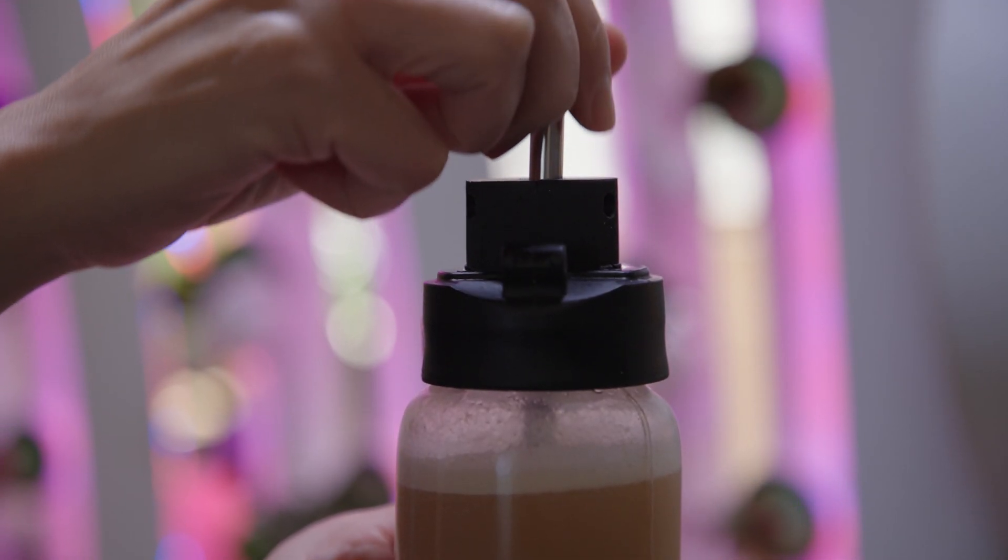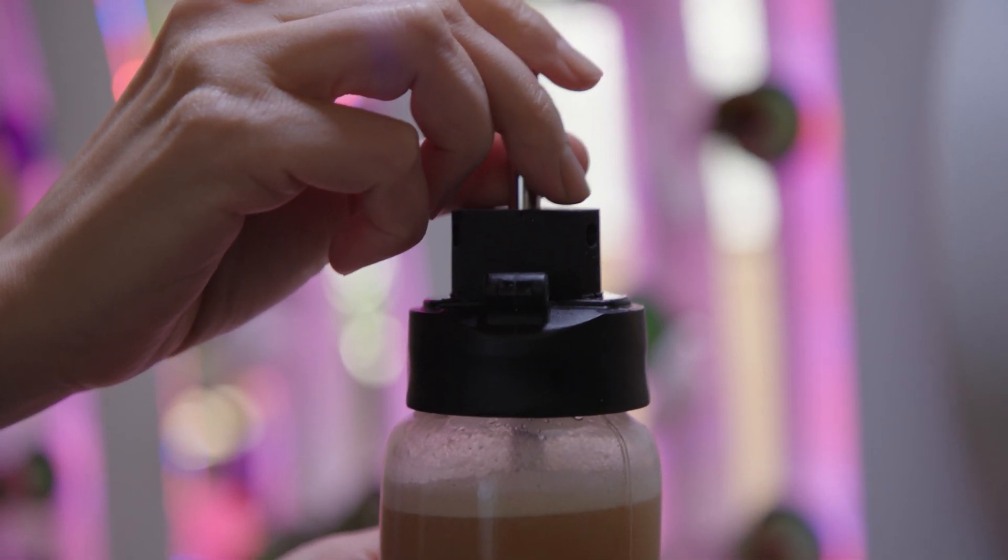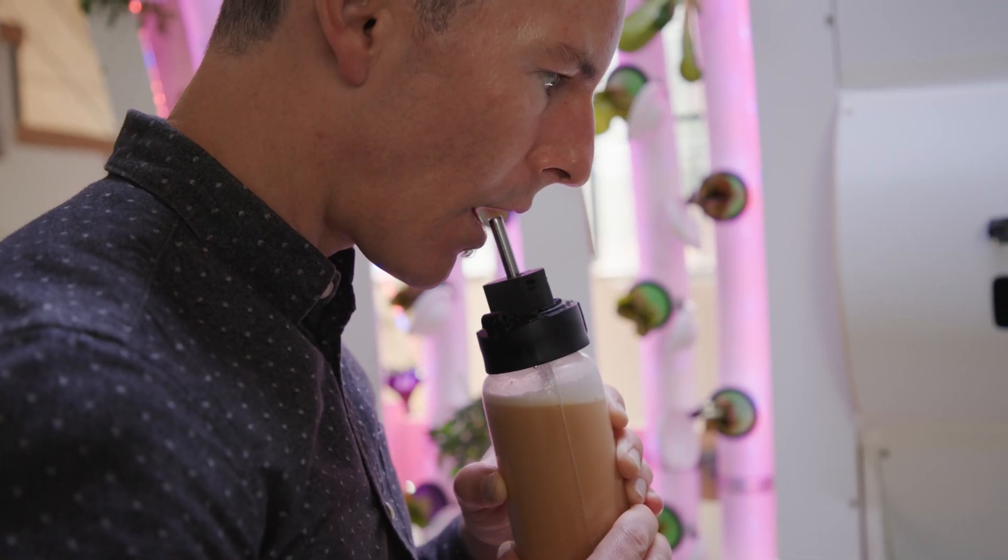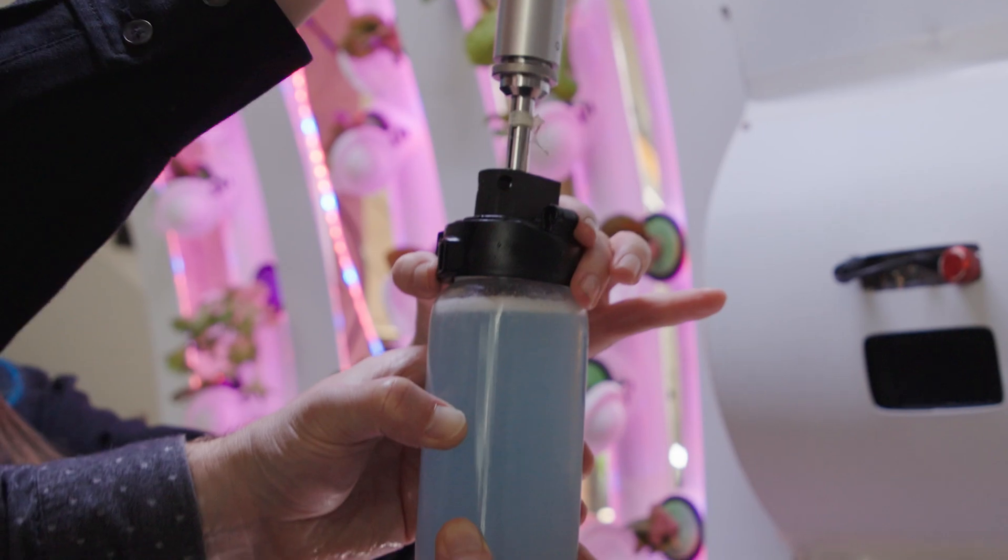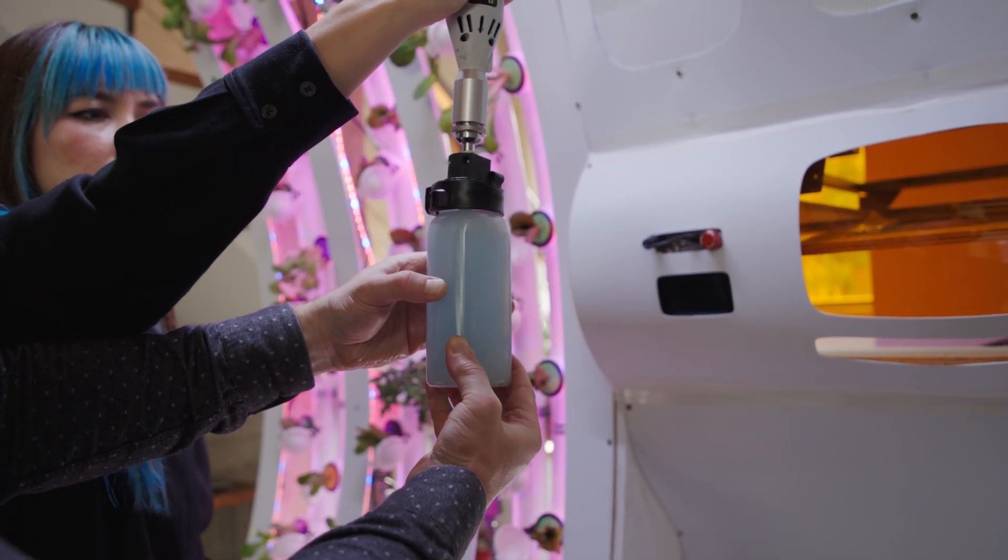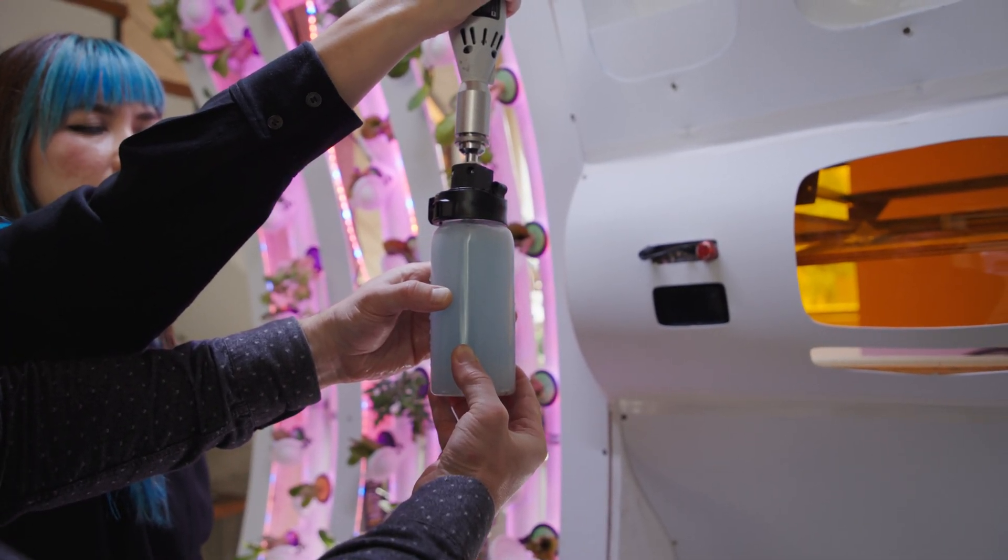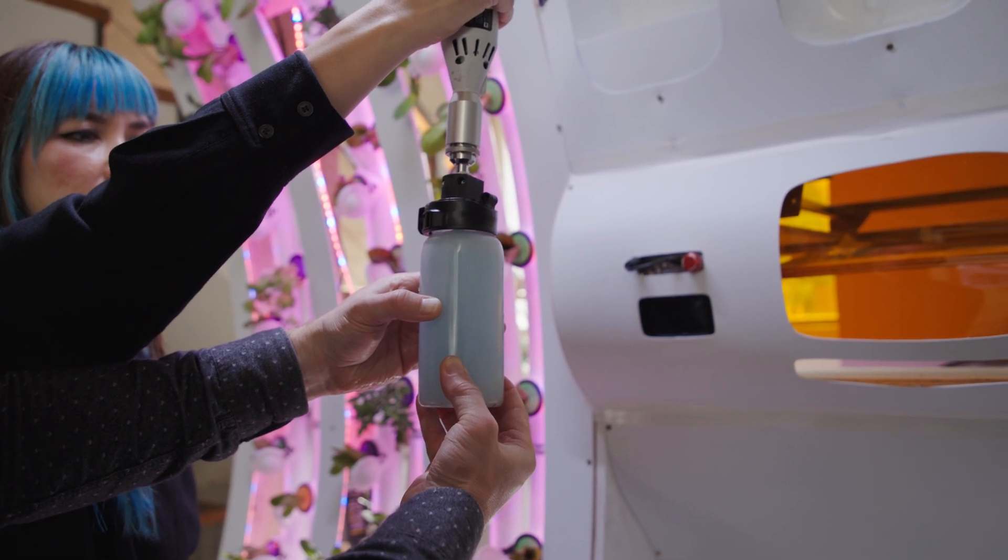Once emulsified, replace the probe with a straw and enjoy this delicious, creamy, hot beverage. To clean the probe, insert it in a second bottle containing an enzyme-based cleaning fluid. Run the emulsifier for 10 seconds, then wipe the probe clean.